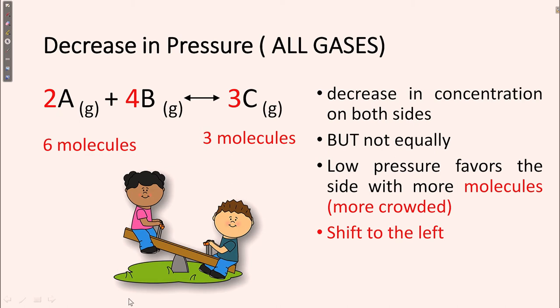Moving to the next slide: if pressure decreases for all gases, the reverse happens. There is a decrease in concentration on both sides — reactant part as well as product part — but not equally. Low pressure favors the side with more molecules or the more crowded part. In the given reaction, this will shift to the left side because low pressure favors the more crowded area, which is the reactant part having 6 molecules, while the product has only 3 molecules. So as pressure decreases, this will shift to the backward or reverse direction.